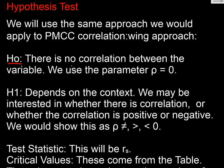So our null hypothesis is that there is no correlation between the variables, therefore ρ equals zero, and we're going to work from there. H1 depends on the context, and we might be interested in whether there's correlation, or we might be interested in any positive or negative correlation.